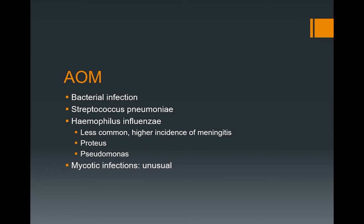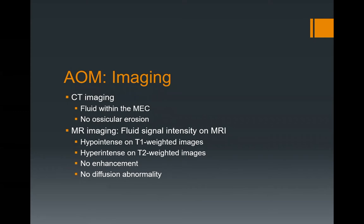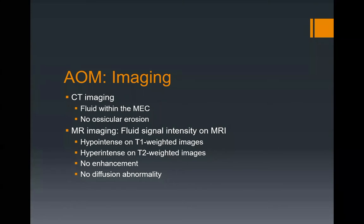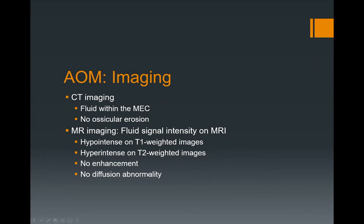From an imaging point of view with acute otitis media, this is an infected fluid collection, but you should not see ossicular or bony erosion. On CT you'll see fluid within the middle ear cavity with no ossicular or bony erosion. On MR imaging this will be fluid signal intensity — hypointense on T1, hyperintense on T2. There's no enhancement and no restricted diffusion. In acute otitis media it can be an exudate rather than a transudate, so the signal may be altered — not as dark as CSF on T1, not as bright on T2 — but still no enhancement and no diffusion abnormality.